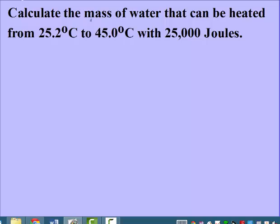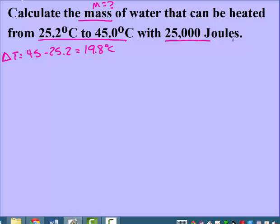On the second problem, we're calculating the mass. We have temperatures, so we need to calculate our change in temperature. And they gave us 25,000 joules, which is our Q.